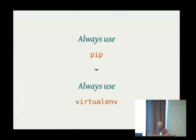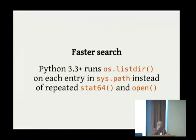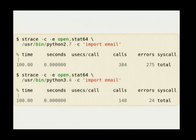Always use pip. Always use virtualenv. On Python 3.3 and later, the toll is not as great when you try to import a lot of packages, because they've added an os.listdir call. When Python starts up, it lists each of the directories on sys.path so that when you say 'import foo,' it can just look in those cached lists and know immediately what file to jump to, instead of having to open and stat all the time. Importing a reasonably complicated package like the email package, Python 3.4 uses less than half the number of system calls, because it caches the list of modules available.